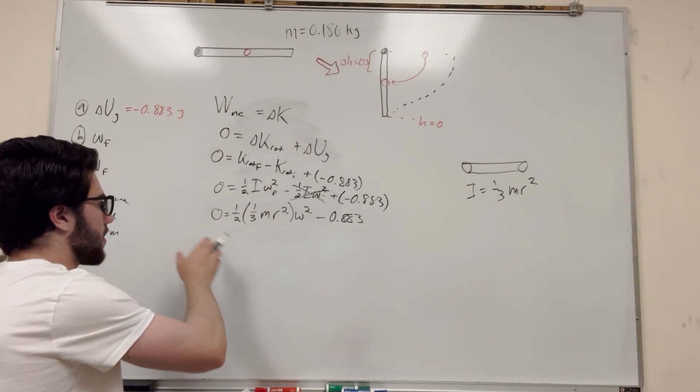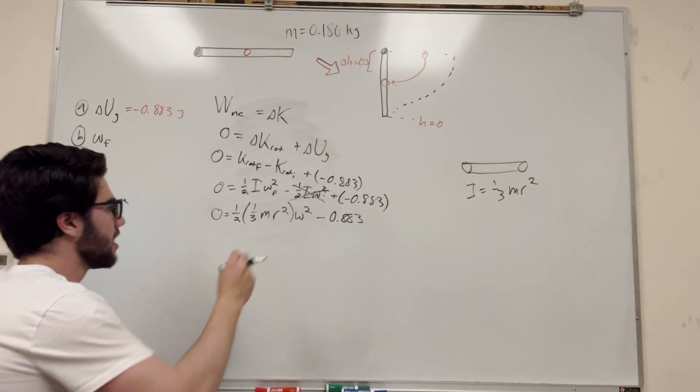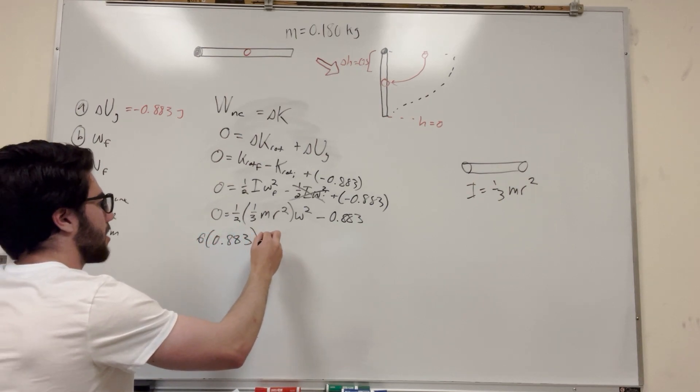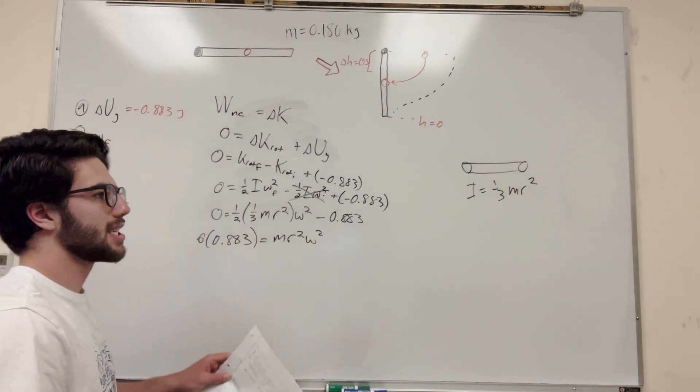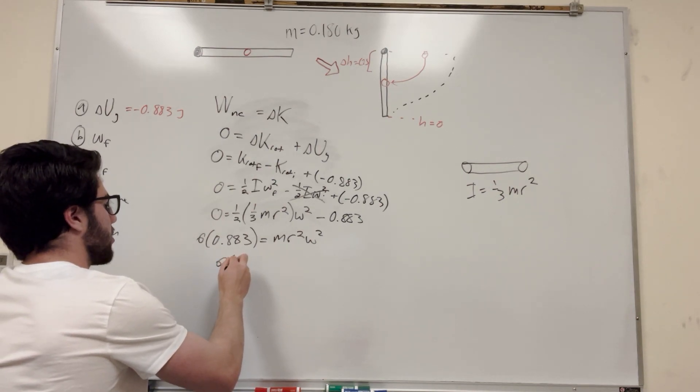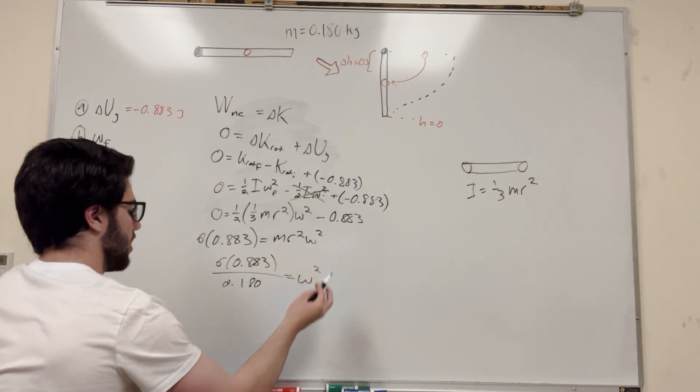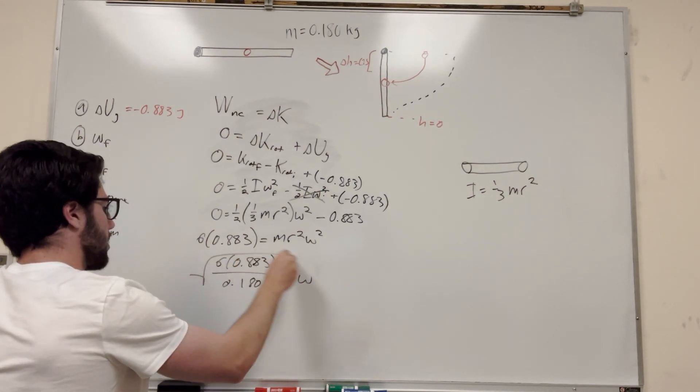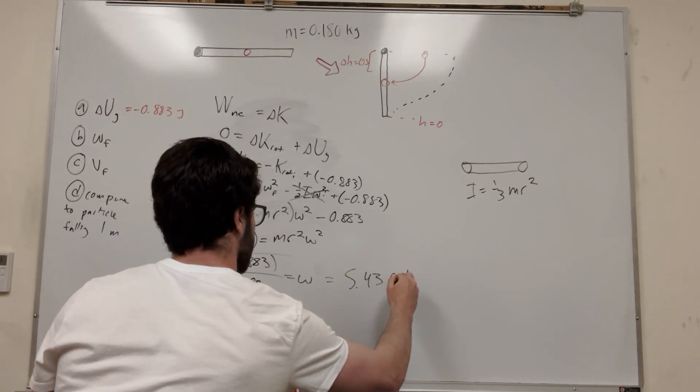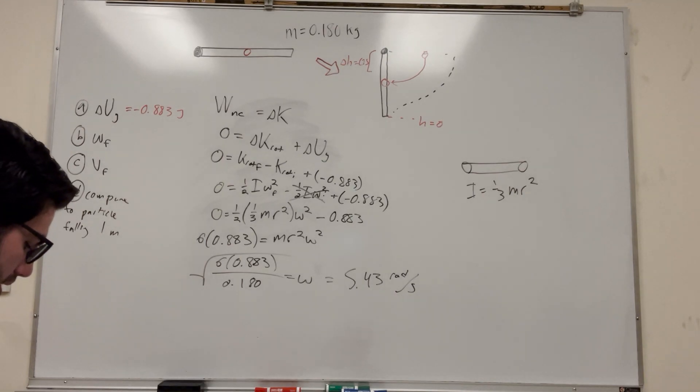So we're looking for omega. So what we're going to have is, let's go ahead and move this over to the other side and then multiply it by two just to get that half out. Or I guess we can multiply it by six because it's one half over one third. It's going to be one over six. So it's going to be six times 0.883. And then this is going to be the mass radius squared omega squared. So we know its mass and we know its radius. Its radius is one, so it's basically not going to change anything in this system because one squared is one. So you're going to take six times 0.883, then divide that by the mass 0.180 is equal to omega squared. So I'm just going to go ahead and take the square root of this side. And you're going to get that omega is equal to 5.43 radians a second.